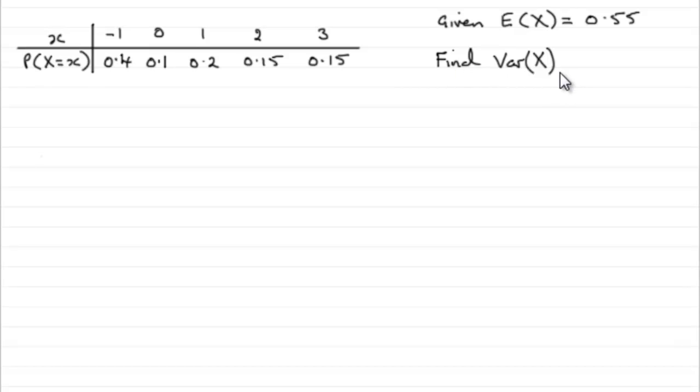Now to find the variance of x, we should be familiar with this particular formula, that the variance of x equals E of x squared minus E of x all squared. And I'll just write that with a square bracket on the outside there, E of x all squared.